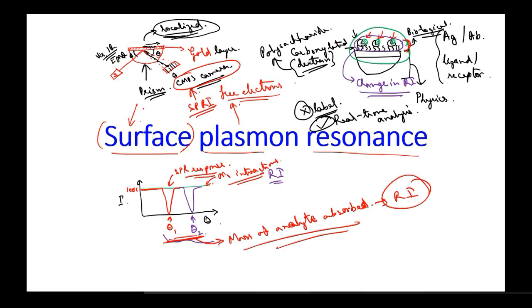Otherwise, if you think of a single detector, you would need to move it at different theta angles to capture the response. However, in the current day, because we have very sensitive CMOS camera systems and other different types of imaging systems, we can capture the spectral images at different angles in a single go. This reduces signal acquisition time and the complexity of the hardware of the system.